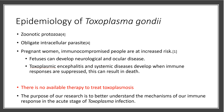Toxoplasma gondii is a zoonotic protozoa, meaning it infects both people and animals. It is also an obligate intracellular parasite, existing within cells, and is of particular concern to pregnant women and immunocompromised people. In pregnant women, fetuses can develop neurological and ocular disease. In immunocompromised people, toxoplasmic encephalitis can occur, resulting in systemic diseases due to immune suppression, which can ultimately be lethal.